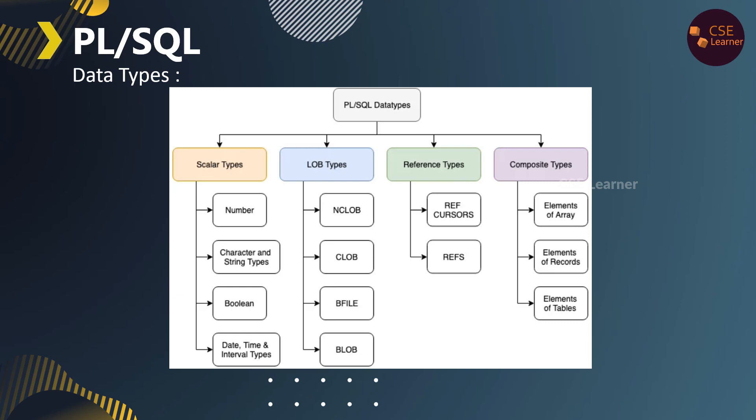DateTime stores year, month, day, hour, minute, second, and timezone hour. And LOB stands for large object data types. If we need to store large data, we use LOB data types. The LOB data types are: BLOB, BFile, CLOB, and NCLOB.